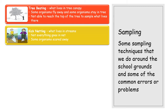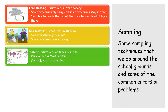Kick netting is for streams. It's as simple as getting your wellies on, taking a net into the stream, and shuffling or kicking your feet about on the bottom. That kicks up organisms buried at the bottom; they go into the current and then into your net. The problem is that not everything goes into the net — some organisms are scared away and escape.